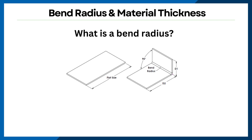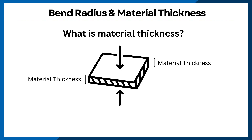Bend radius refers to the radius which forms on the inside of a bend. A smaller radius means a sharper bend, while a larger radius offers a smoother curve. On the other hand, material thickness literally refers to how thick the material actually is.